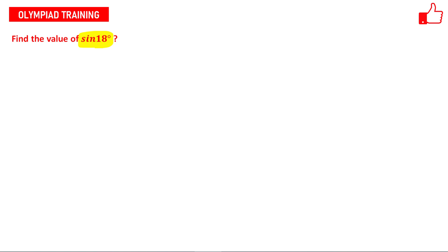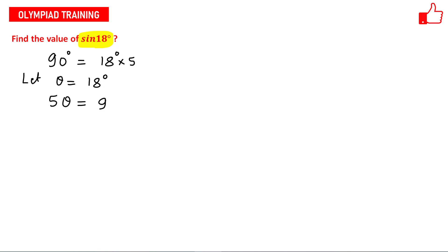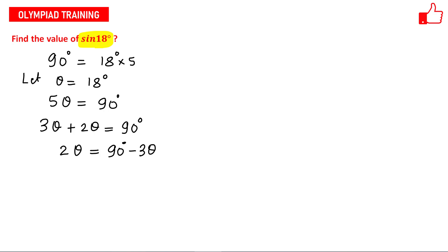Basically, 90 degree can be written as 18 into 5, that is 18 degree into 5. So let theta be equals to 18 degree. This means 5θ = 90 degree, and 5θ can be written as 3θ + 2θ. So 2θ = 90 degree minus 3θ. This is the key step to solve this problem.